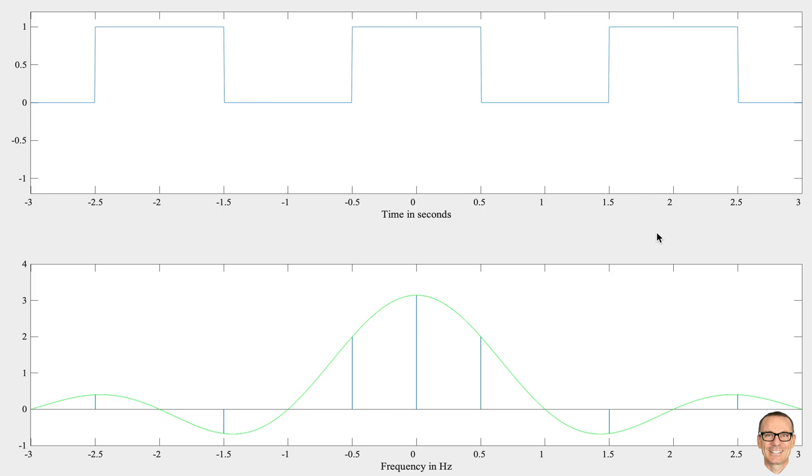The Fourier transform tells us that any function can be generated by adding together sinusoids with the right amplitudes, phases, and frequencies.